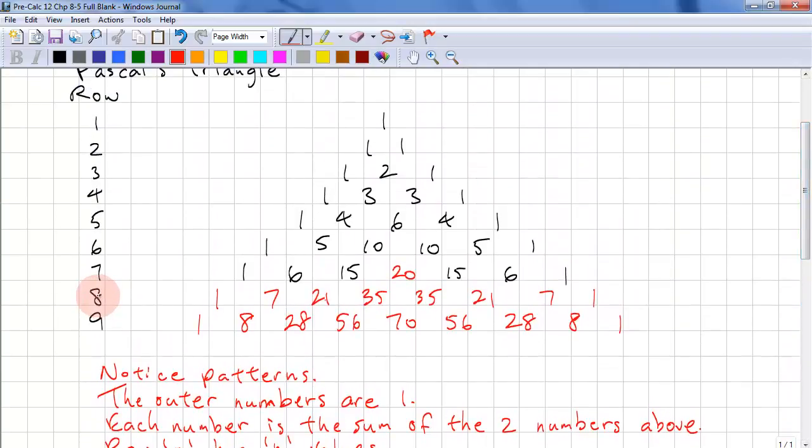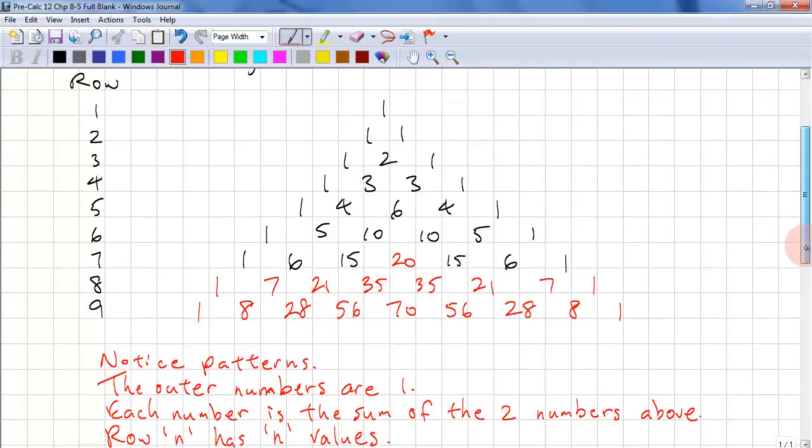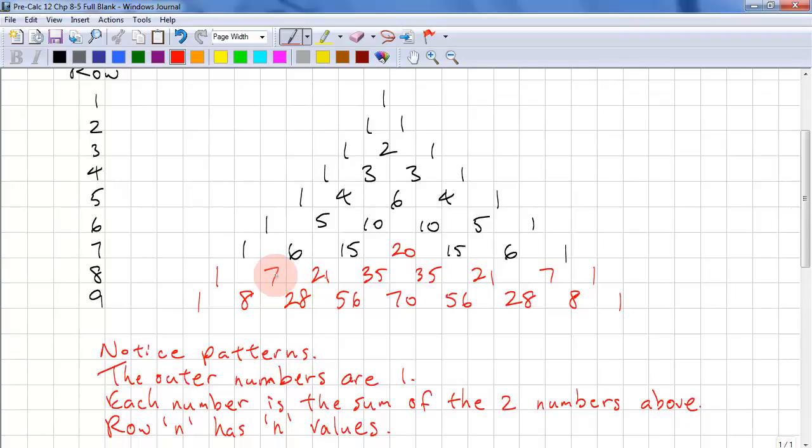So here in the 8th row, this value is 7 choose 1. This value is 7 choose 0. This value is 7 choose 7. This value is 7 choose 6.